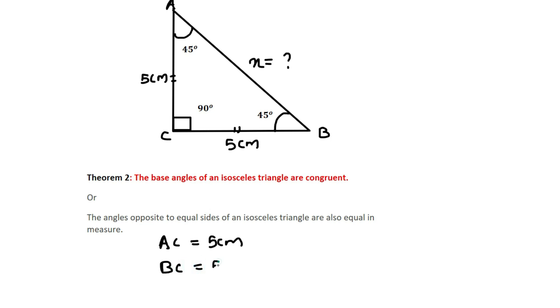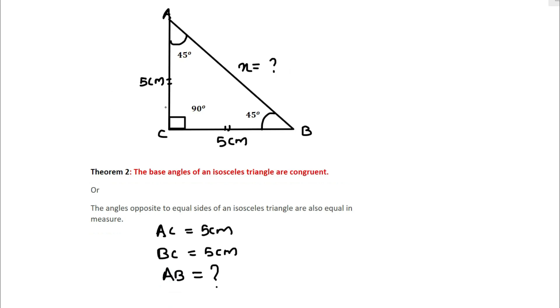We are asked to find AB. You can see angle C is 90 degrees, which makes this a right-angle triangle. We can apply the Pythagorean theorem to find the value of x.